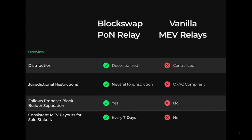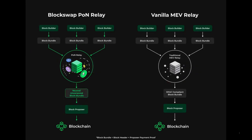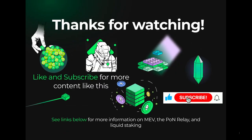The PON relay will bring back neutrality to Ethereum. Here we can see the differences in the blocks that are proposed into the blockchain. The PON relay uses zero-knowledge proofs and encryption to ensure privacy and security. Relays play a critical role in the functioning of the Ethereum blockchain, and we only expect relays to become more popular. The Proof of Neutrality relay is a promising solution to centralized relays and is an innovation worth knowing about. If you want to learn more about the PON relay or MEV in general, check out the links below. Thanks for watching!